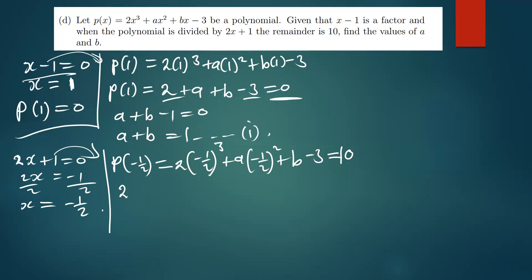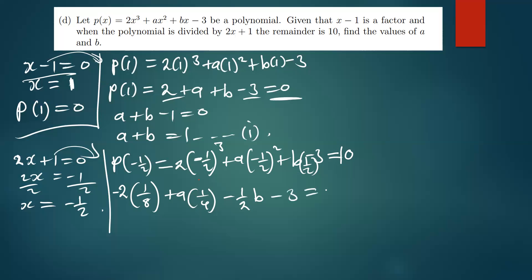Simplifying: a negative number raised to an odd power gives a negative, so we get -2(1/8). A negative number raised to an even power stays positive, so a(-1/2)² = a/4. Then b times -1/2 gives -b/2. So we have -1/4 + a/4 - b/2 - 3 = 10.